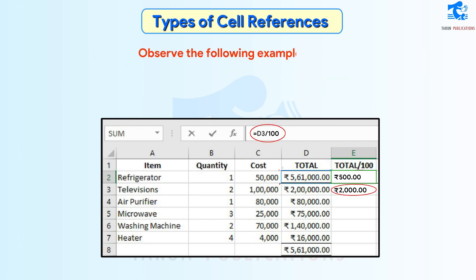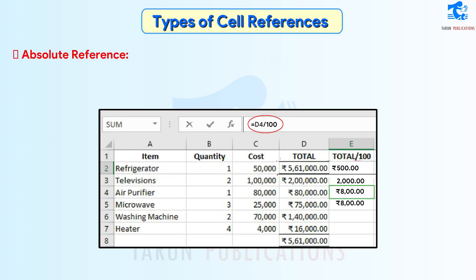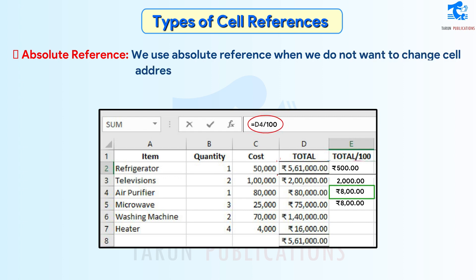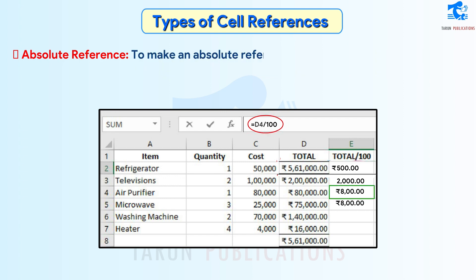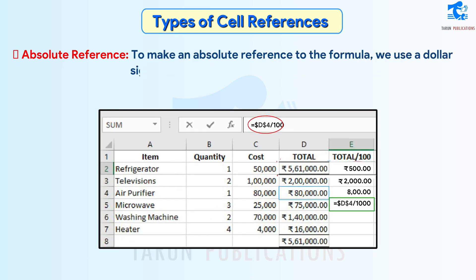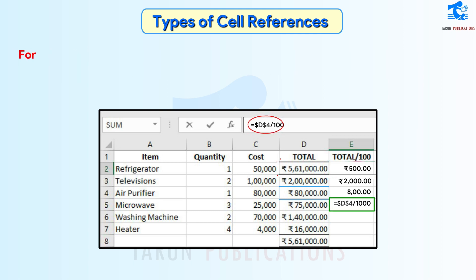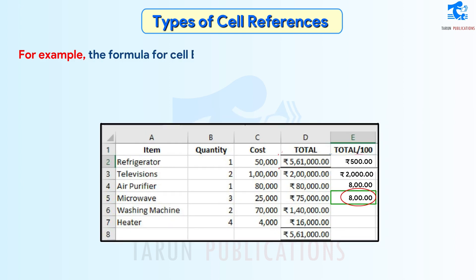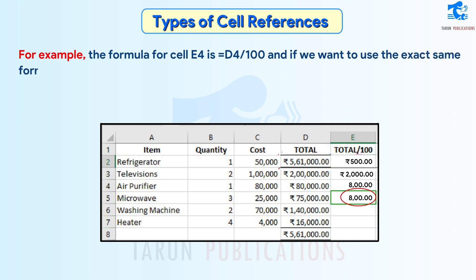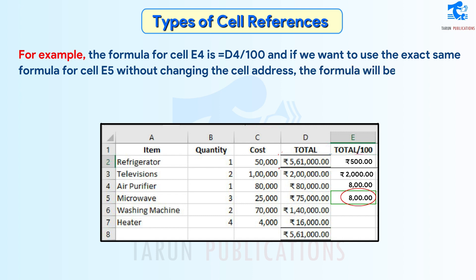Observe the following example closely. Absolute Reference: We use Absolute Reference when we do not want to change the cell address in the formula while copying it to another cell. To make an absolute reference in the formula, we use a dollar sign before the column name and row number. For example, the formula for cell E4 is = D4/100, and if we want to use the exact same formula for cell E5 without changing the cell address, the formula will be = $D$4/100.